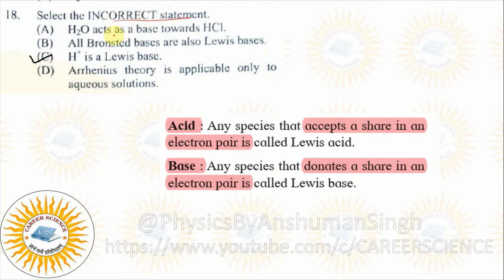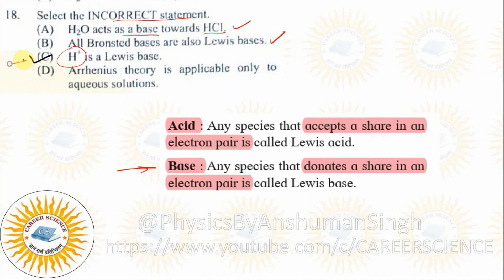Select the incorrect statement. H2O acts as a base towards HCl — that is correct. All Bronsted bases are also Lewis bases — yes, that is also correct. H+ ion is a Lewis base — according to Lewis, a base is a substance which donates an electron pair. But H+ ion has no electrons to donate, so it cannot be a Lewis base. Hence, the incorrect statement is C. Arrhenius theory is applicable only for aqueous solution — that is correct.